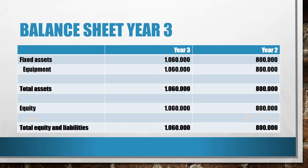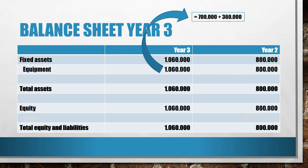The balance sheet looks a little different in year three. In year two we had equipment with a book value of 800,000, but that increased to 1,060,000 euro in year three. The original equipment from year one is now worth 700,000 euro, and the new equipment has a book value of 360,000 euro. Adding these two together gives us a total book value of 1,060,000 euro.